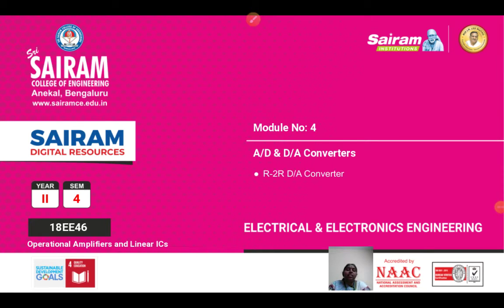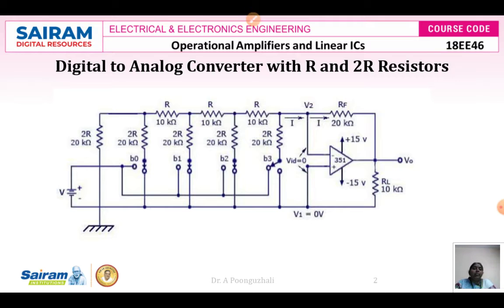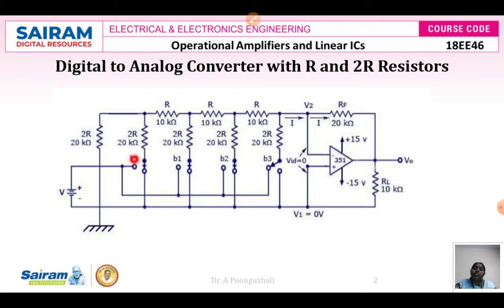We will see the next type of DAC, that is the R2R DAC. Here we are going to use only two types of resistors: R and 2R. This R2R ladder network DAC is going to be constructed using an inverting amplifier configuration. The feedback resistance RF is connected between the output and the inverting input terminal. On the input side, switches are connected to the 2R resistors. Between the two 2R resistors, the R resistor values are placed, and the input resistance at the output is 2R.